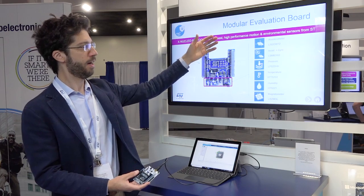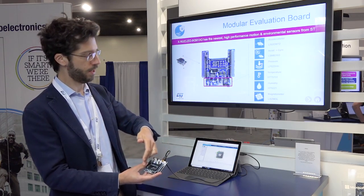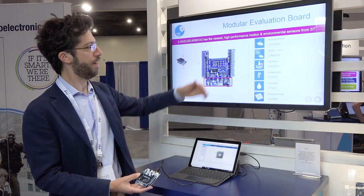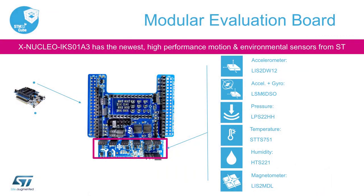Specifically, on this board at the top you have an accelerometer, an IMU — accelerometer plus gyroscope — a pressure sensor, a temperature sensor, a temperature and humidity sensor, and a magnetometer.